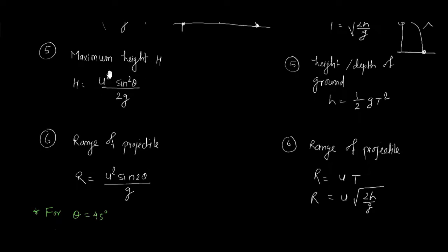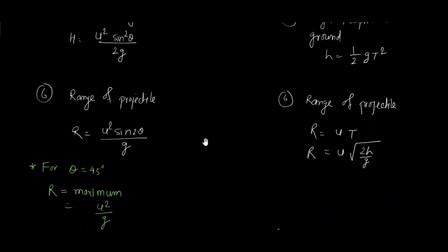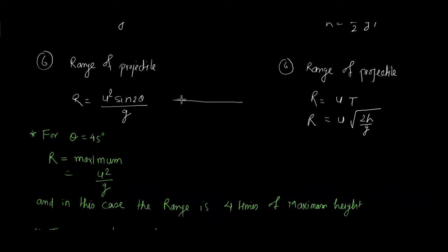Maximum height is given by H = u²·sin²θ / 2g. For the horizontal projection case, the height or depth is the actual vertical distance traveled by the projectile. Range is the horizontal distance covered by the projectile. The formula is R = u²·sin2θ / g, and for horizontal projection it equals the horizontal velocity multiplied by the time of flight.